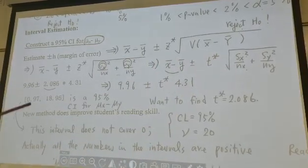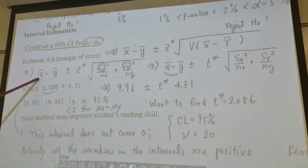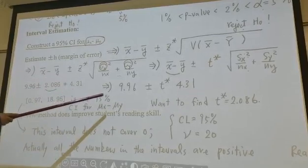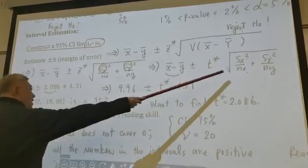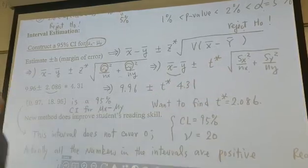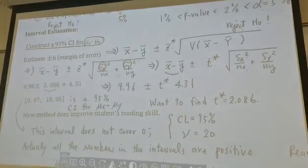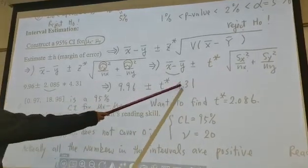So as a formal calculation, x̄ minus ȳ, we know this is 9.96. And here, after I plug in sx, sy, nx and ny, I get 4.31.